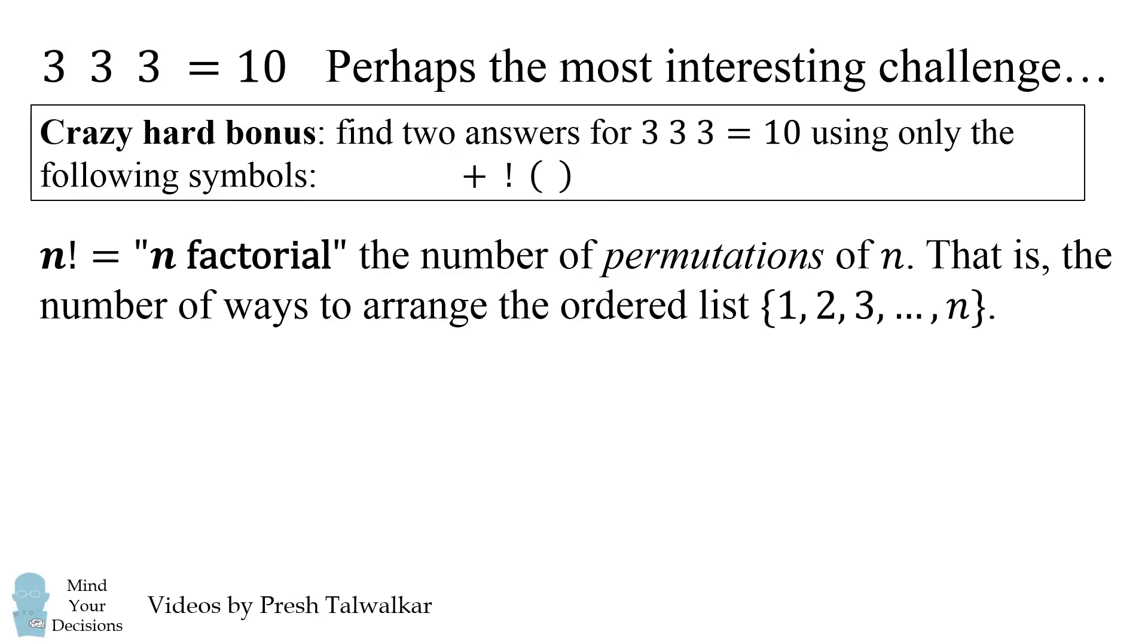The most common way is n factorial, or n exclamation point. This is the number of permutations of n. That is the number of ways to arrange the ordered list going from 1 to n. n factorial is the product of the numbers from 1 to n, and 3 factorial is equal to 1 times 2 times 3, which equals 6. We've been using that in many of these equations.